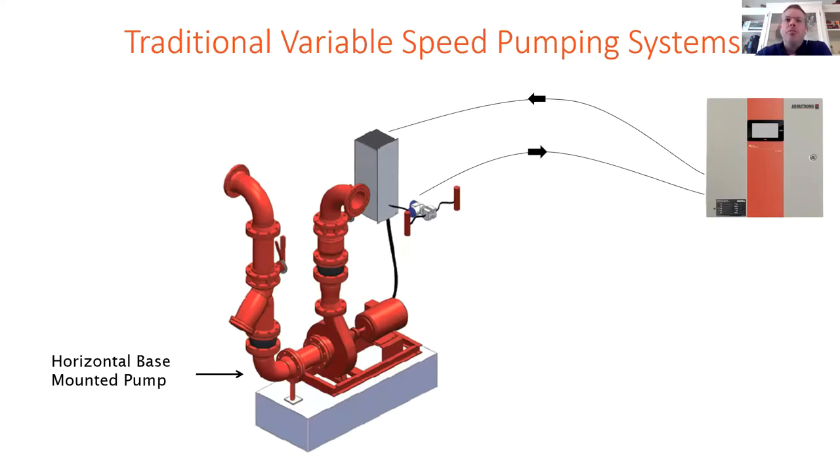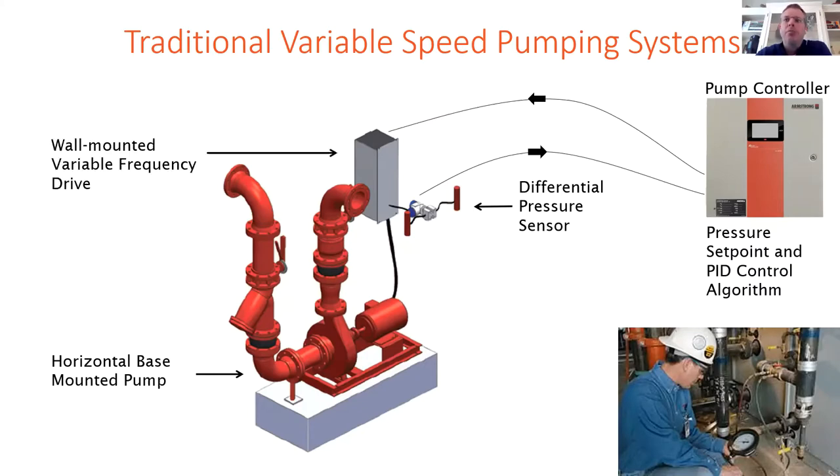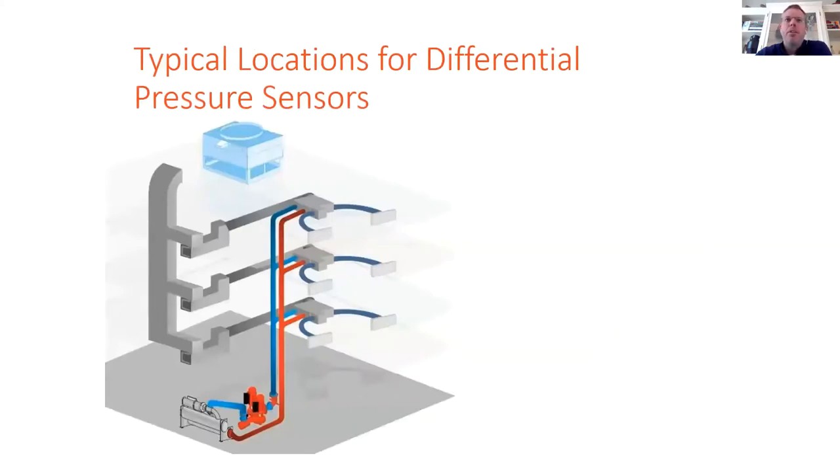With a traditional variable speed pumping system, there's a differential pressure sensor that's located out in the system somewhere. And via a test and balance contractor, a minimum pressure set point is determined which will satisfy the most remote load during normal operation. The pump controller is then going to vary the speed of the pump motor via variable frequency drive to ensure that the differential pressure set point is maintained as two-way valves open and close out of the system.